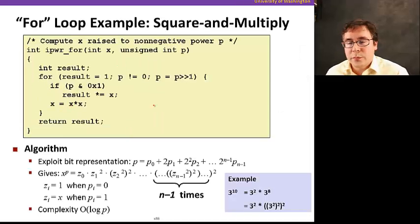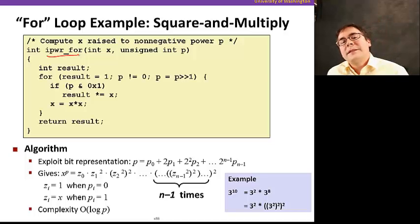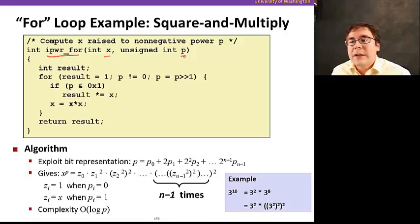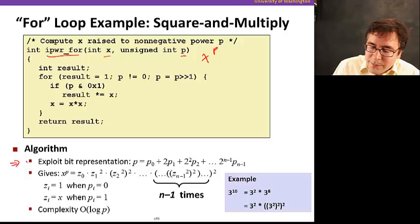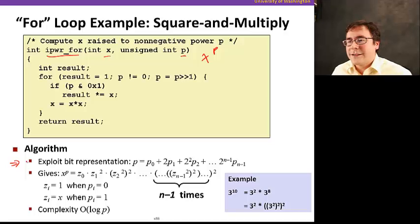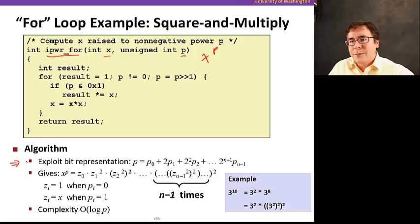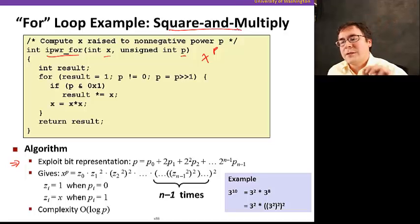Now let's see how we implement a for loop. A for loop essentially has bounds on the number of iterations. In this example, we're implementing a function that takes x and p as parameters and computes x raised to the p power. There's a clever algorithm that exploits the bit representation of p — it takes as many steps as the number of bits in p. For every bit of p that's set to 1, we do the multiplication — that's why it's called square-and-multiply. I encourage you to stop, take a look at the slides, and think about it.